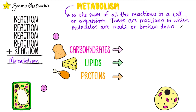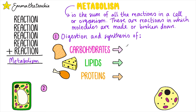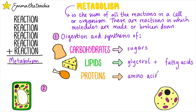There are six metabolic processes to learn. The first is the digestion and synthesis of carbohydrates, lipids, and proteins. Carbohydrates break down into sugars, lipids break down into glycerol and fatty acids, and proteins break down into amino acids. Lipids are synthesized from one glycerol molecule and three fatty acid molecules — synthesis is the reverse of digestion, where small molecules build up into bigger molecules.